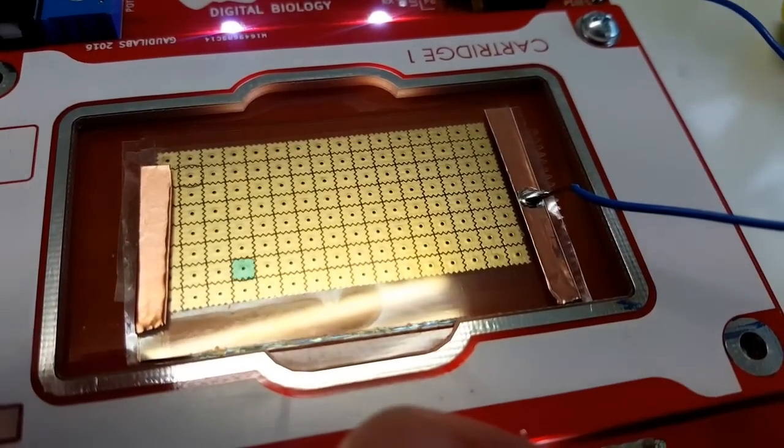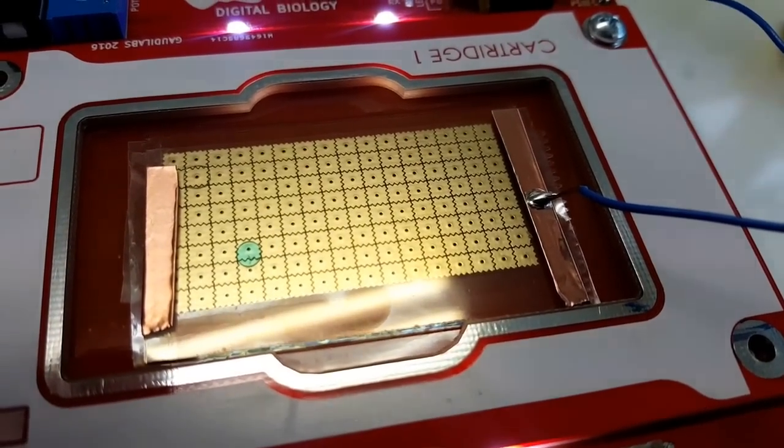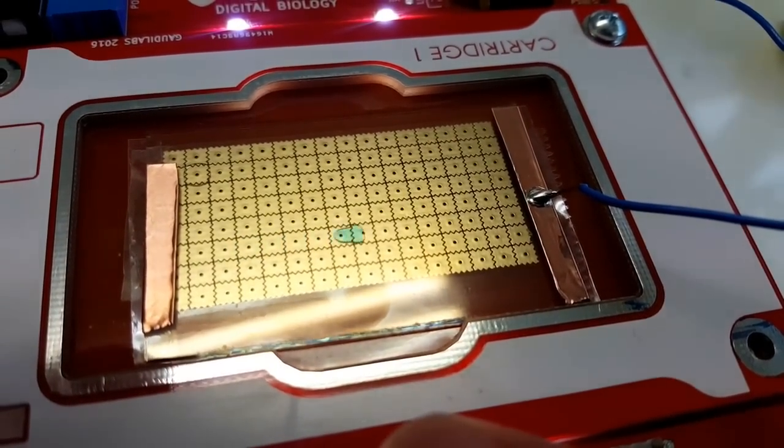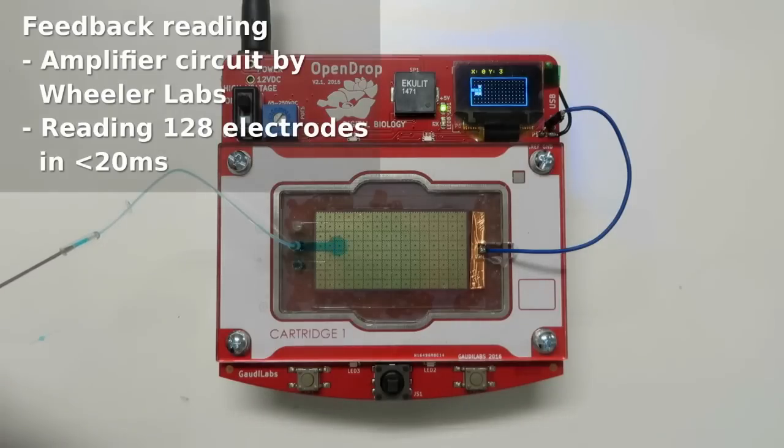It can happen if an electrode is not functioning well, like now, that the droplet gets stuck. That's why we need the feedback drive that I will demonstrate in this video.